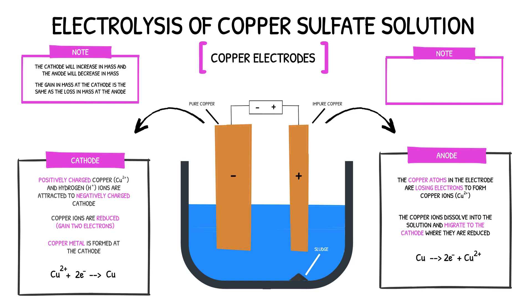As well as the observations noted above, the blue colour of the copper sulphate solution is maintained throughout the process. This is because the same number of copper ions are constantly entering the solution from the anode and leaving the solution at the cathode. Thus, the concentration of copper ions within the solution remains constant.